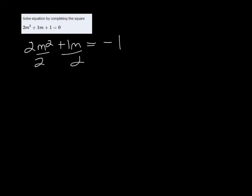Because you want A to be 1 to complete the square, so we get M² + ½M = -½. So we're trying to find what to add to both sides to complete the square.